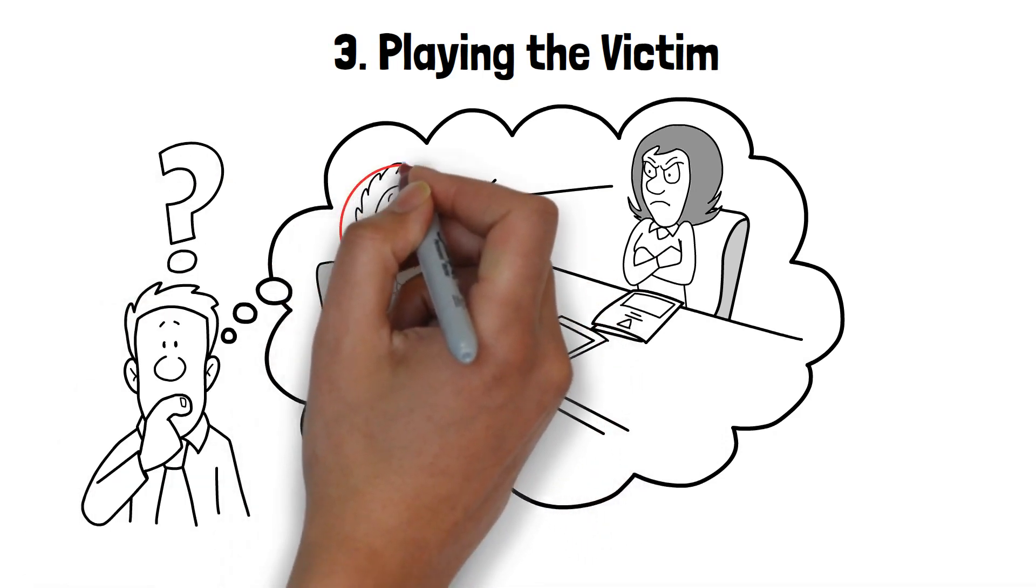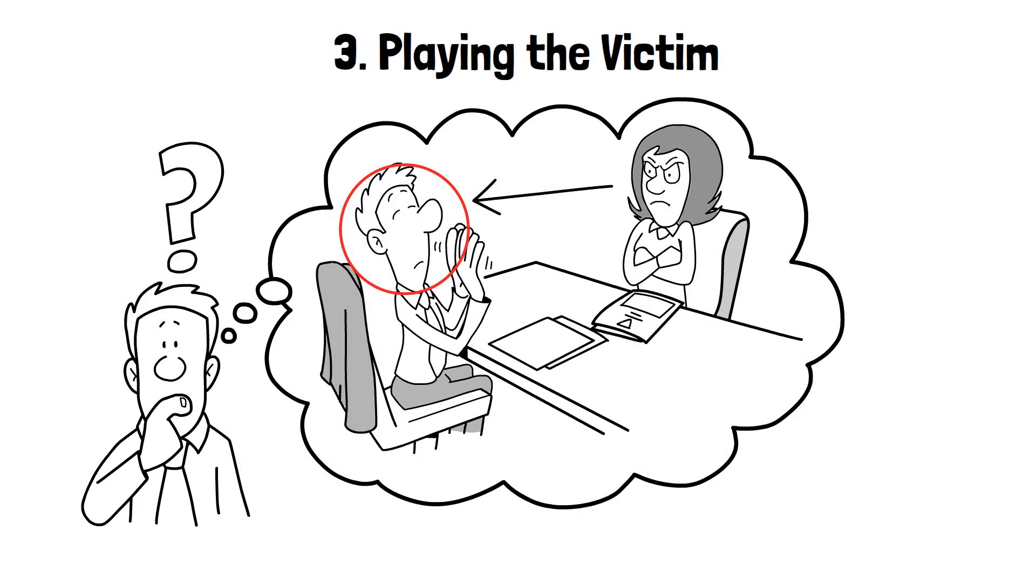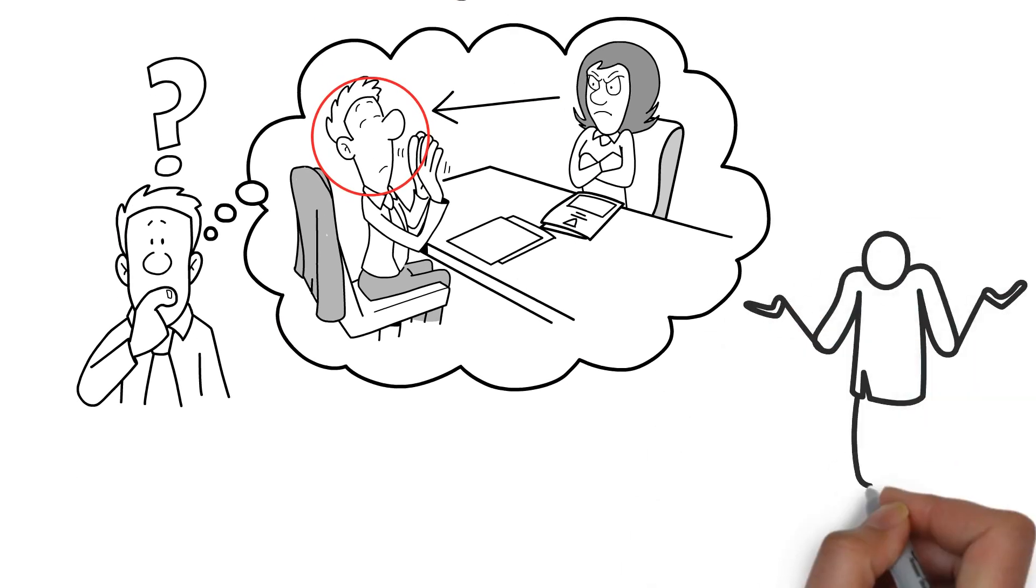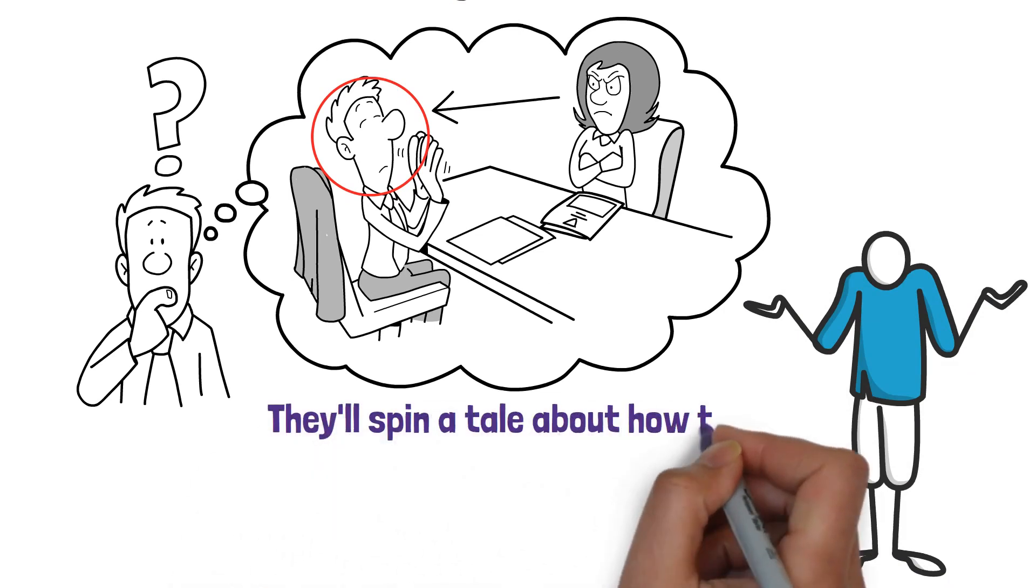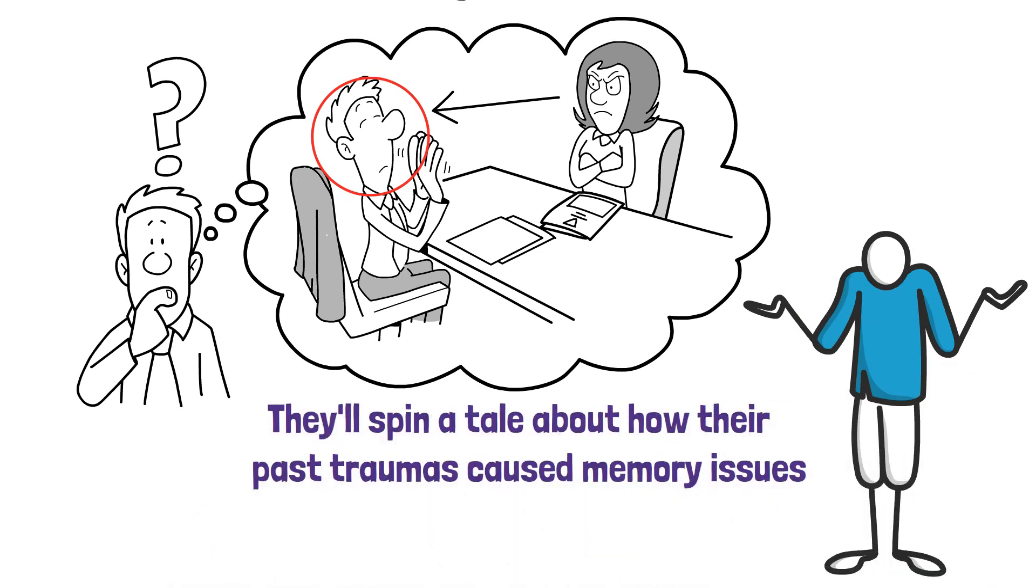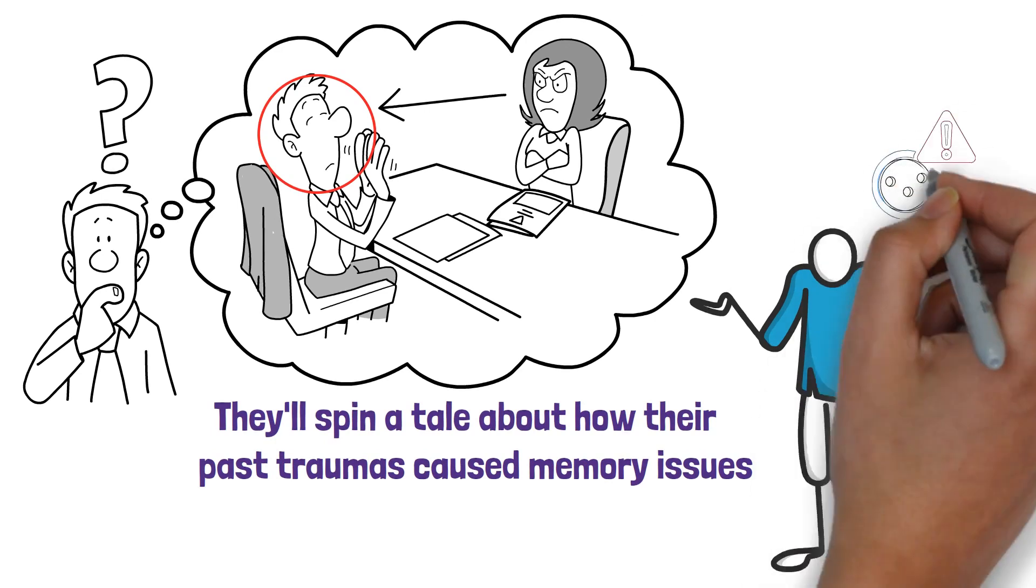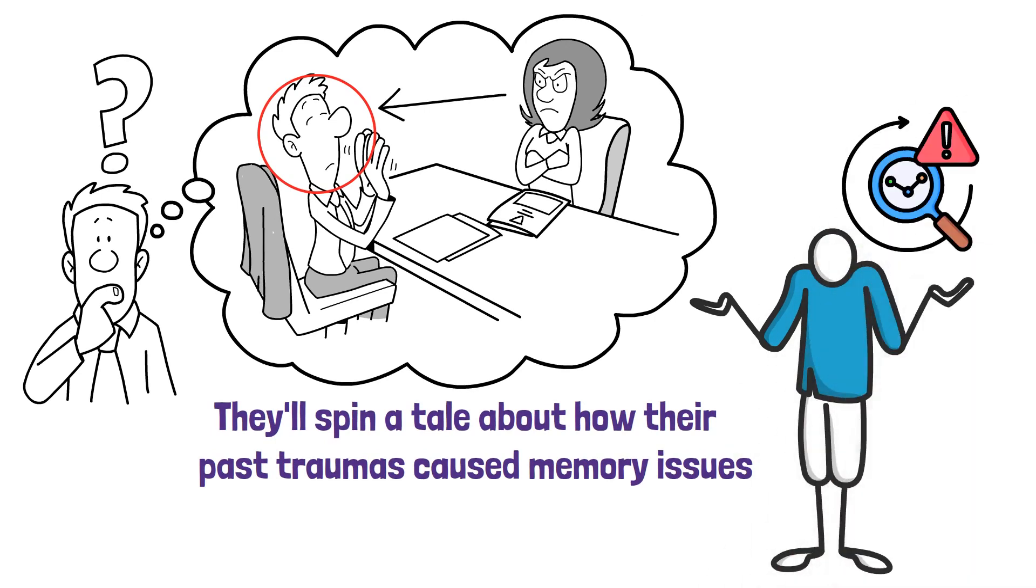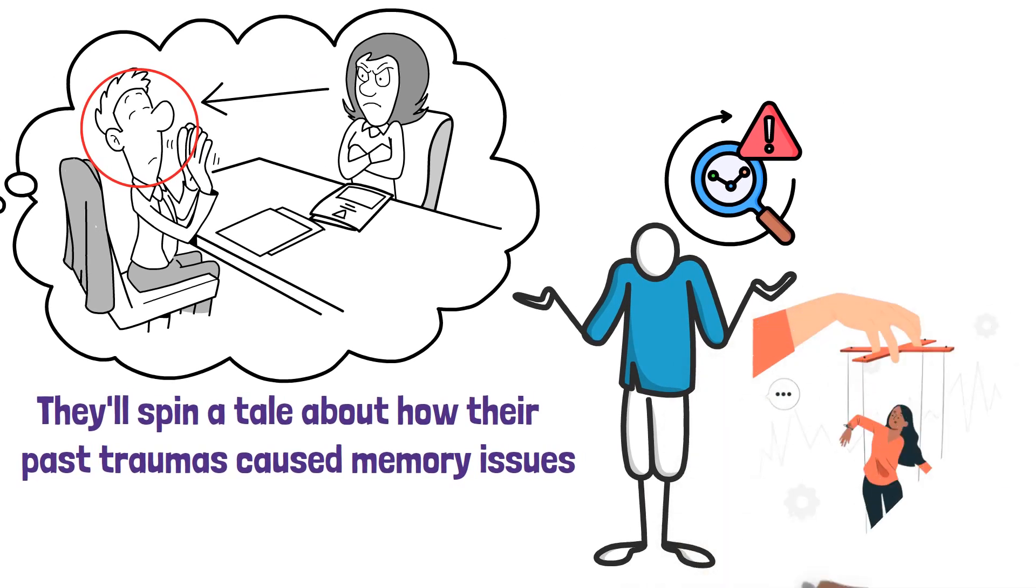They're skilled at shifting blame and making themselves the victim. Say they forget your anniversary. Instead of apologizing, they'll spin a tale about how their past traumas caused memory issues. By shifting focus to their troubles, they divert attention from their actions, making you feel guilty for bringing it up. Recognizing this pattern is vital. It's essential to distinguish between genuine trauma and manipulative tactics.